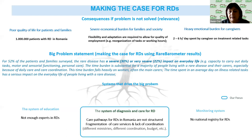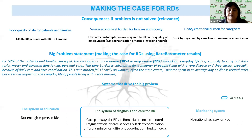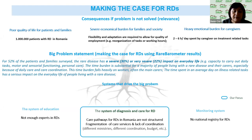The monitoring system is lacking because there is no national registry for rare diseases in Romania. Because of this, the healthcare system and national authorities don't know how to create services according to patients' needs because they don't have data.